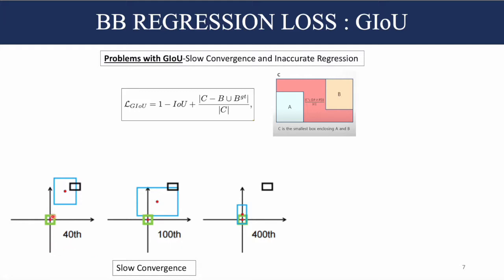This can be seen in the figure: the green box is the ground truth, the black is the anchor box, and the blue is the predicted box after adding offsets. Over iterations, the predicted bounding box keeps increasing its size to reduce the penalty area, finally overlapping and then trying to converge. But even after 400 iterations, it has not accurately converged. Another issue is when the predicted box is at a horizontal or vertical orientation to the ground truth — the penalty area is already very small, leading to a very weak gradient and slower convergence.